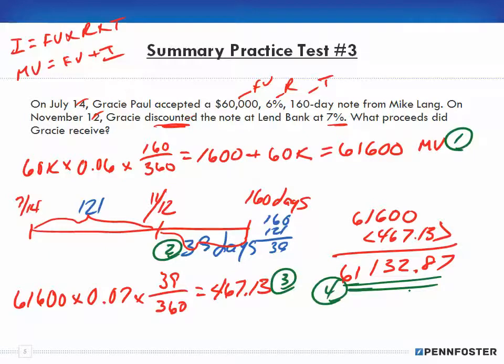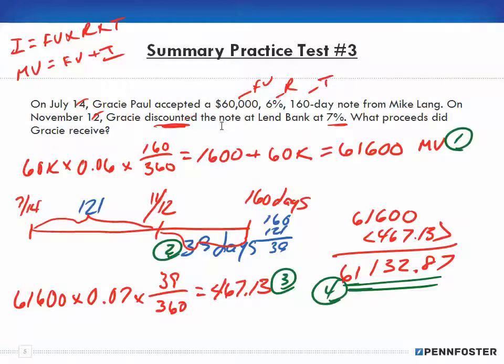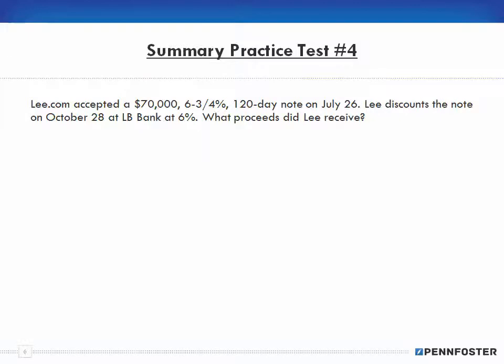Problem number four: Lee.com accepted a $70,000, 6-3/4%, 120-day note on July 26th. Lee discounts the note on October 28th at LB Bank at 6%. What proceeds did Lee receive? Exactly the same as the previous problem. Face value times rate times time; maturity value equals face value plus interest.